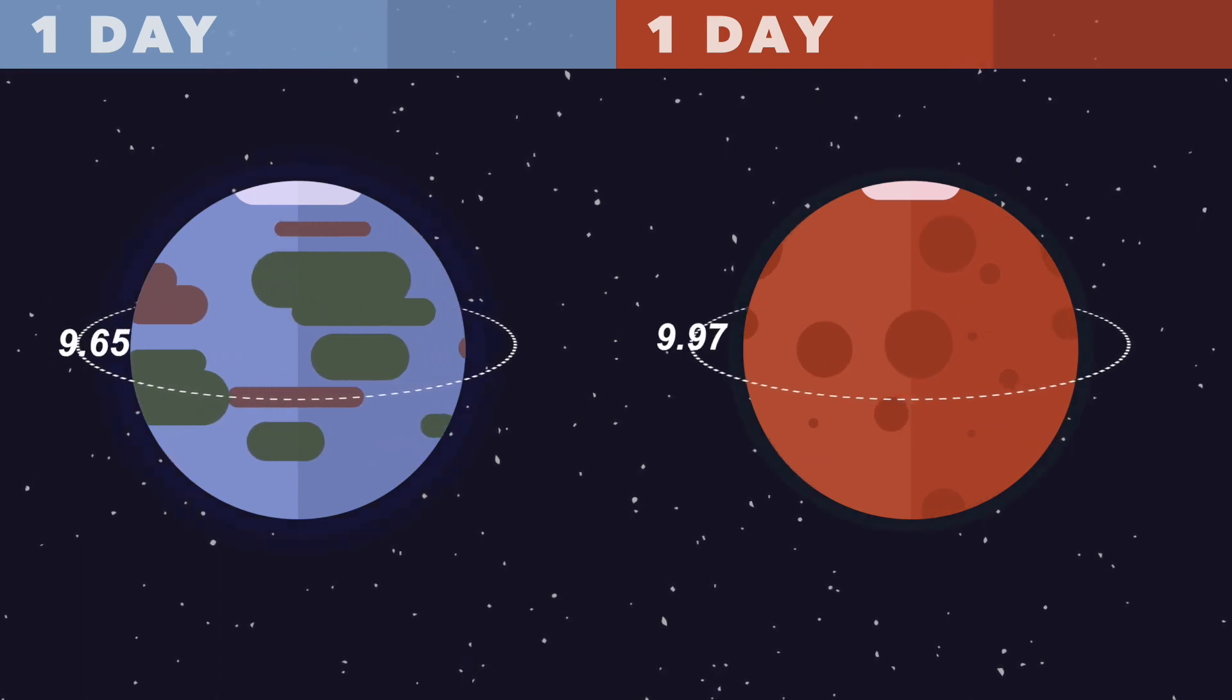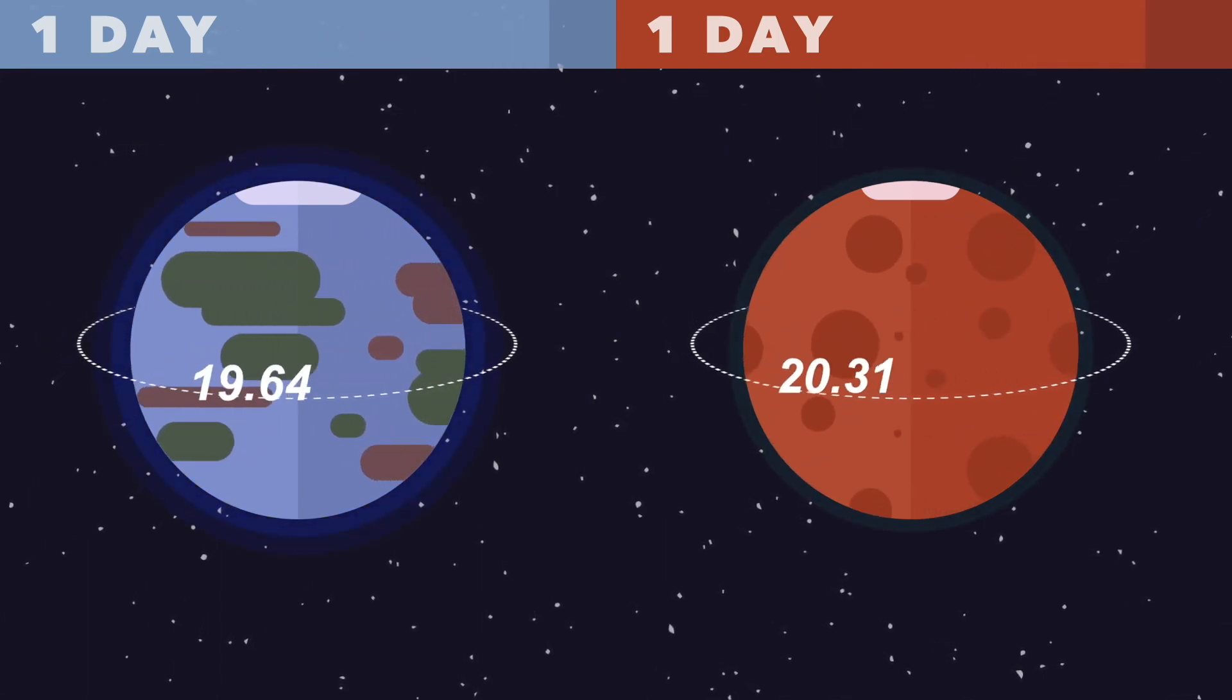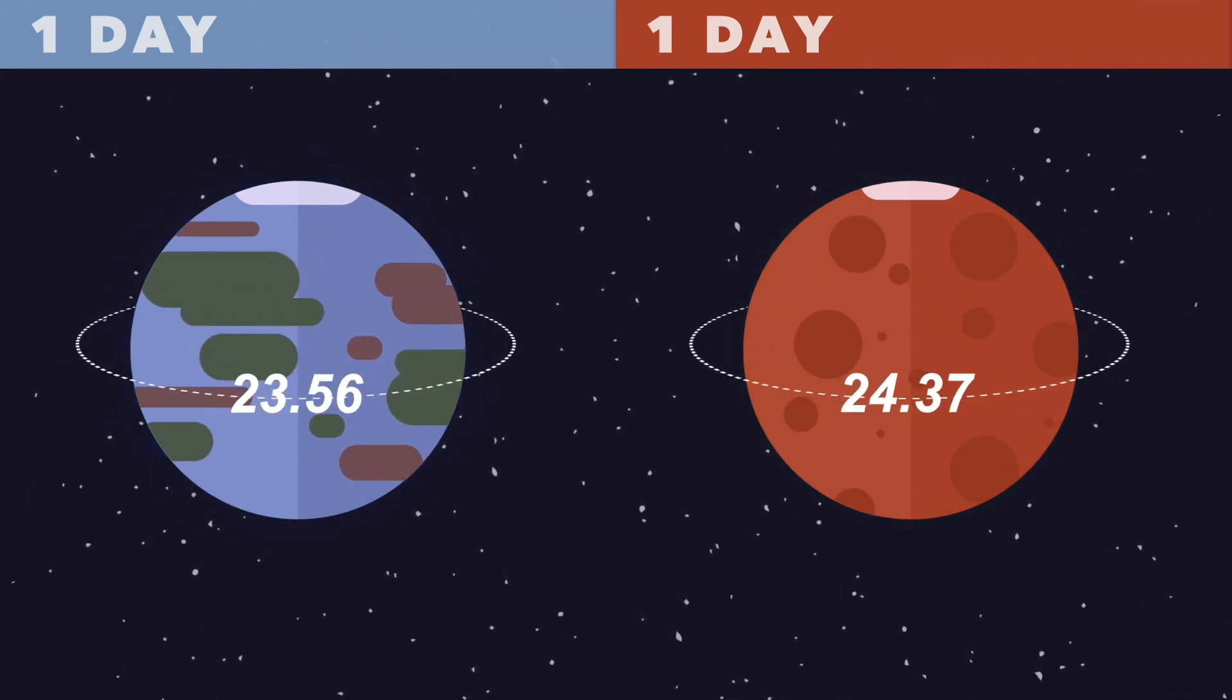However, while Earth has 24-hour days, Mars has a 24-hour, 37-minute day. You could probably handle that.